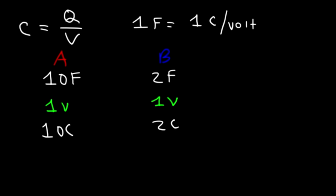Now what if we increase the voltage? Let's say if we charge up to 2 volts. Capacitor A can hold 20 coulombs of charge. Capacitor B, if we connect it to a 2-volt battery, it can hold up to 4 coulombs of charge. So as you can see, capacitance is basically charge efficiency.